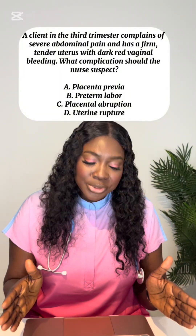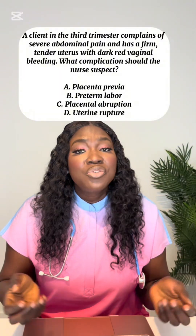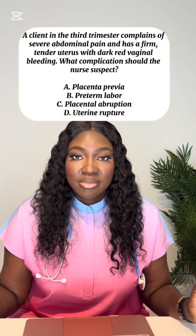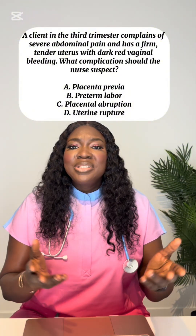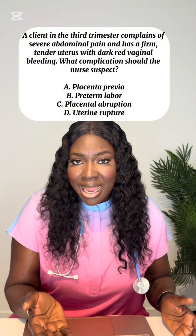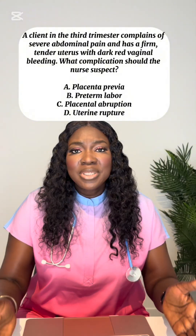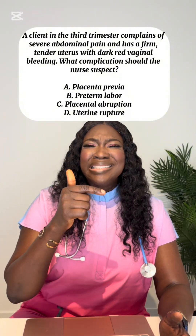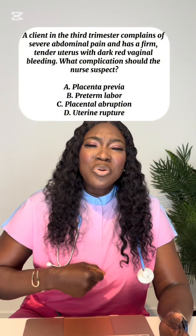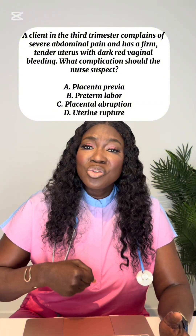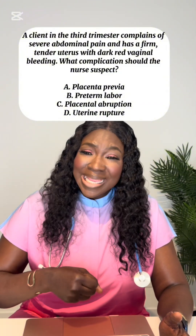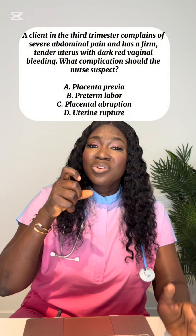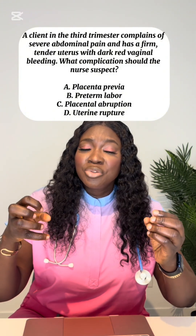Placenta previa would present with bright red blood — that's the sign you'd see there. Preterm labor shows no signs matching this presentation. Uterine rupture would show tearing abdominal pain where the patient complains of the muscle wall of the uterus tearing open, along with an abnormal-feeling abdomen.